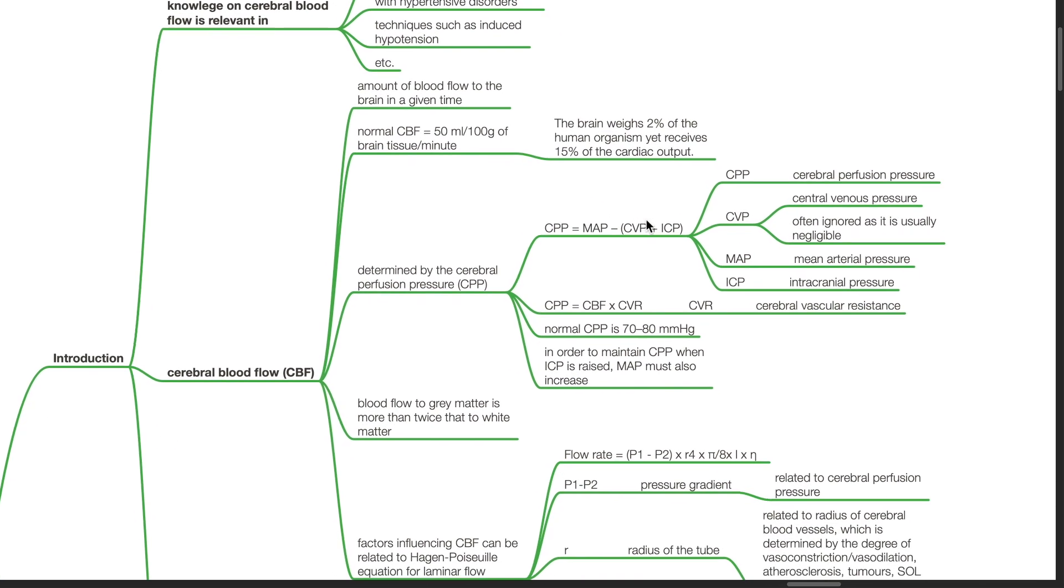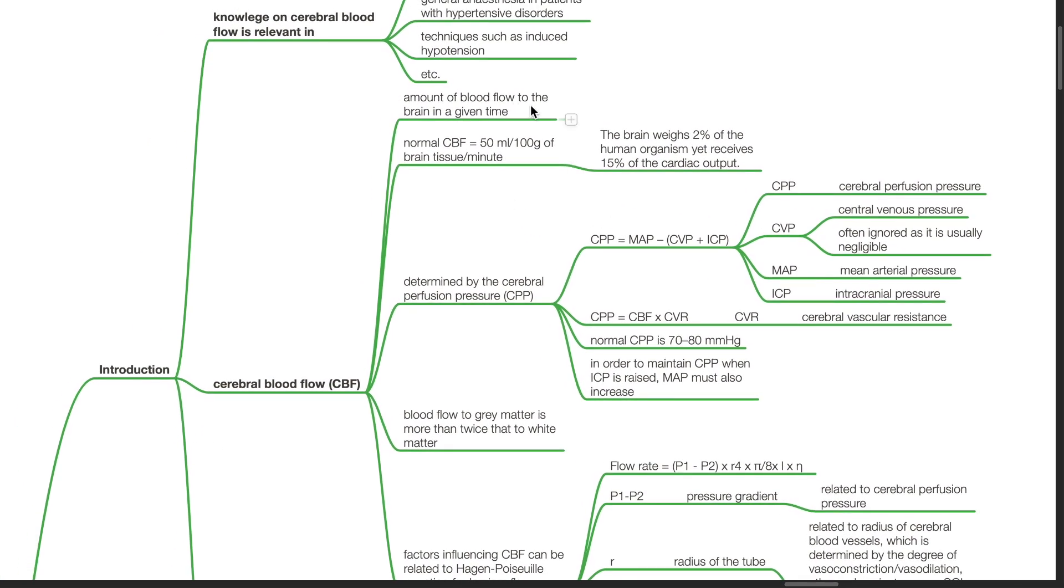Cerebral blood flow is the amount of blood flow to the brain in a given time. Normal CBF is 50 mL per 100 g of brain tissue per minute. The brain weighs 2% of the human organism yet receives 15% of the cardiac output.